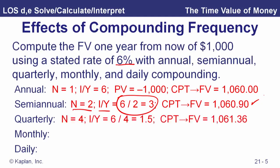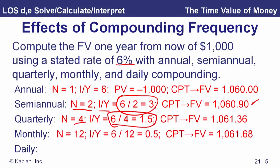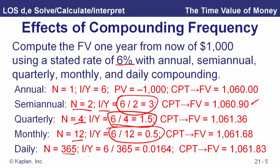With quarterly compounding, we divide the stated rate by four and use a 1.5% interest rate for four periods. Monthly gives us 12 periods with an effective monthly rate of 0.5%. With daily compounding, assuming a 365-day year, N equals 365 and our daily effective interest rate is 0.0164% — that's six divided by 365 — giving a future value of $1,061.83.